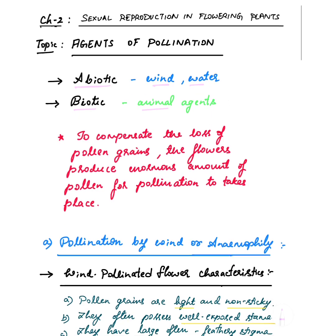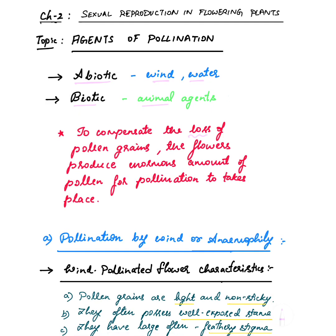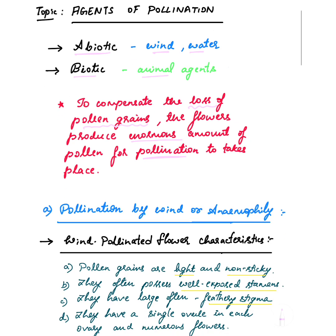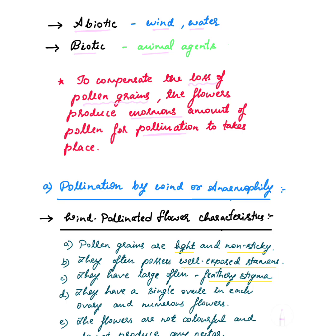One point you have to remember: to compensate for the loss of pollen grains, flowers produce an enormous amount of pollen grains for pollination to take place. This can be asked as a give-reason question — why are enormous amounts of pollen grains produced? That is so that sufficient pollen will be available for pollination.